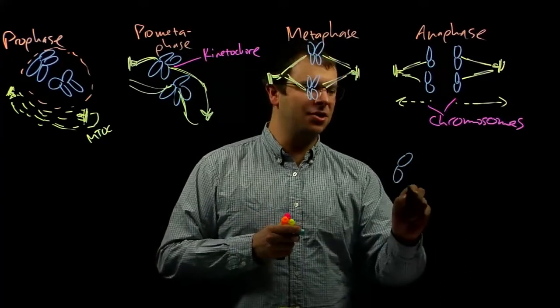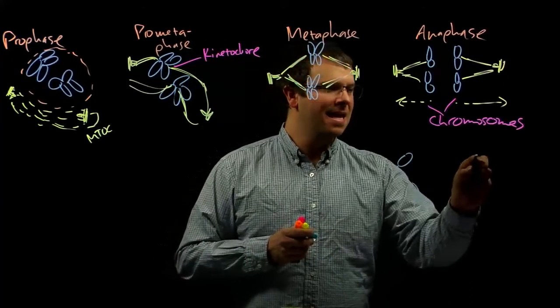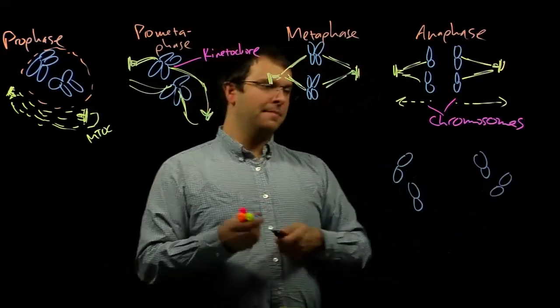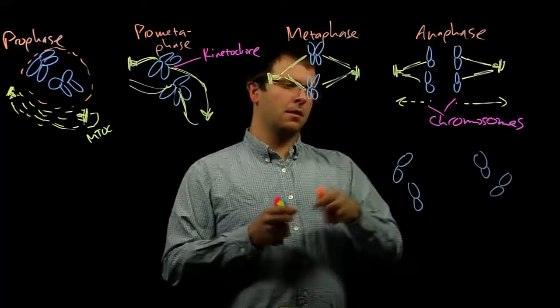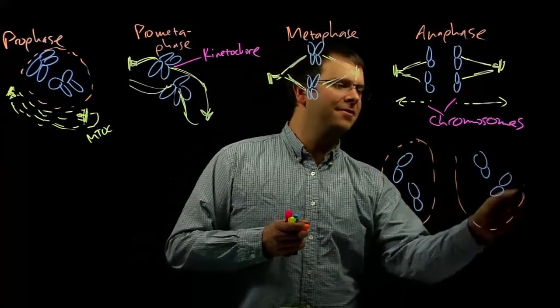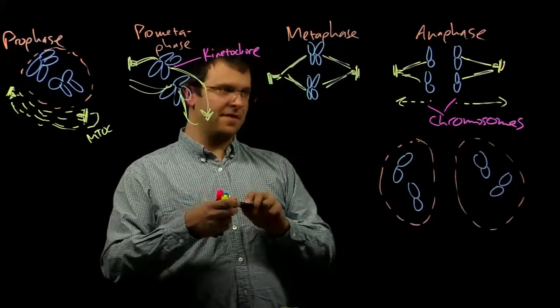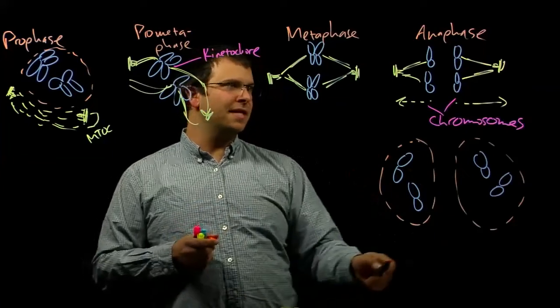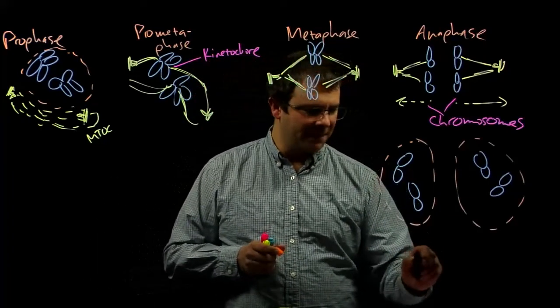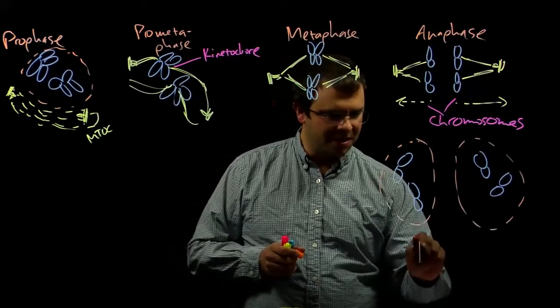Once the chromosomes have headed basically towards either side of the cell, they're now on either side of the cell and the nucleus can reform. As the nucleus reforms, this is our last phase of mitosis, which is called telophase.